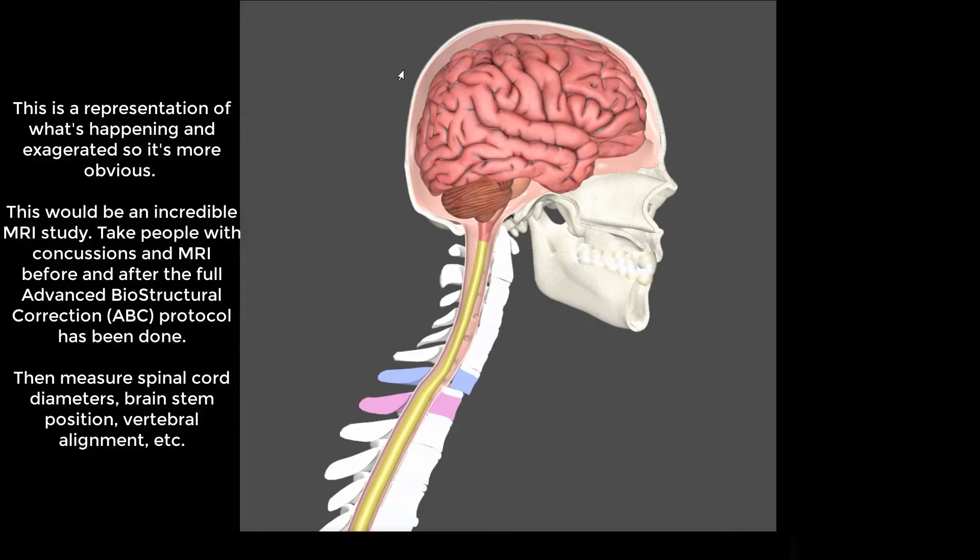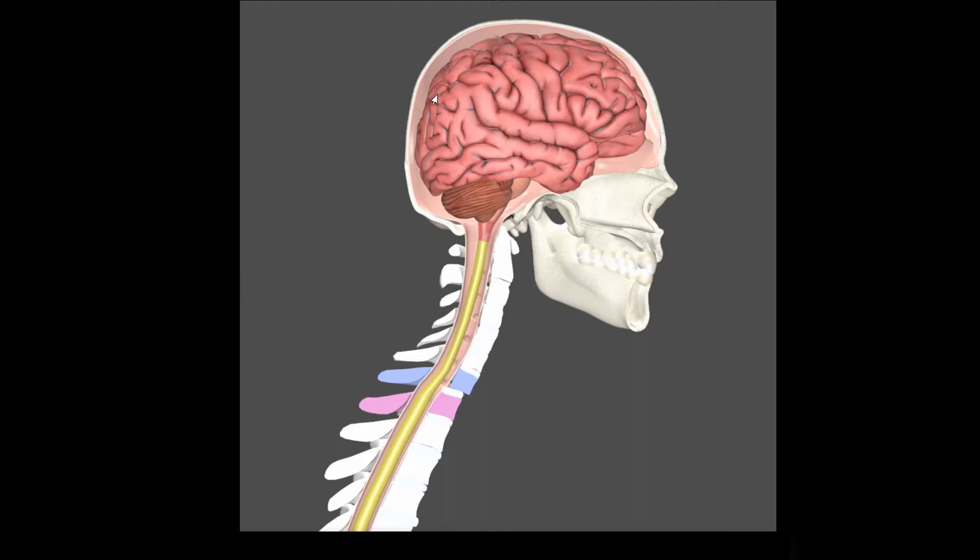See, when people have a concussion, they never look at the spine other than to see if something maybe got broke. But they're always thinking head hit. Head hit from the back. Head hit from the front. Head hit, head hit, head injury impact from the top. Whatever it is, they never, ever, ever look at this.